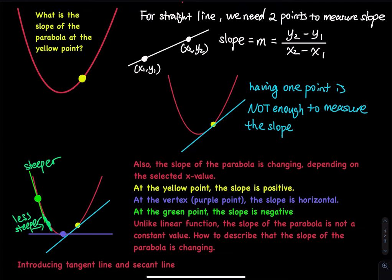For a parabola, you pick a bunch of x values, and for each x value you get a different slope. When x equals negative 3, you have one slope; when x equals negative 1, you have another slope. You are not going to get the same slope the whole time because the slope of the parabola is changing. So since the slope is changing, how do you write a function to describe this? I want you to write one function to describe how the slope changes — for example, f of x equals x squared.